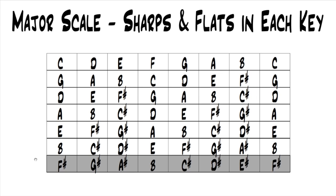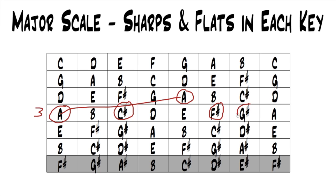We can just go and do that through every single key. If we do one more — A is the fifth of D, so that becomes our next key. A has three sharps. We keep the sharps from D, which are C sharp and F sharp, and then we add a sharp on the last note of the A major scale, which is G. So now A has three sharps: F sharp, C sharp, and G sharp.